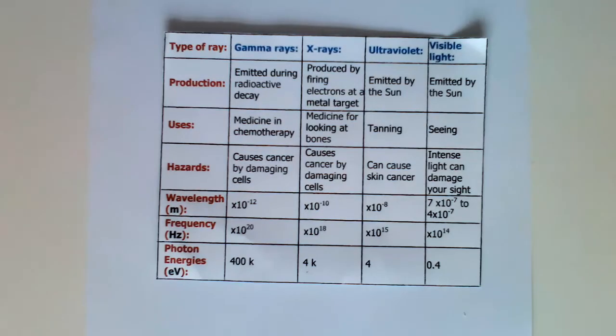First, we look at gamma rays, x-rays, ultraviolet and visible light. These are all in order. So the production of gamma rays, emitted during radioactive decay, uses medicine in chemotherapy, hazards causes cancer by damaging cells, wavelength in metres times 10 to the minus 12, frequency in hertz times 10 to the 20th, and photon energies in electron volts is 400k.